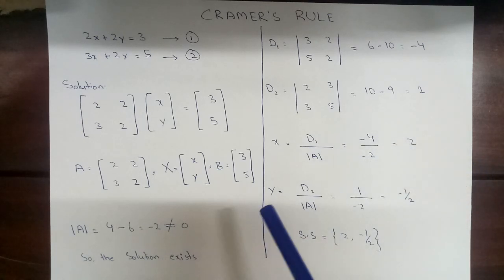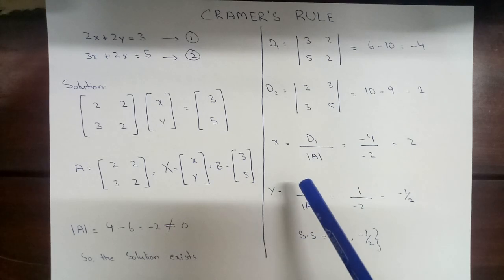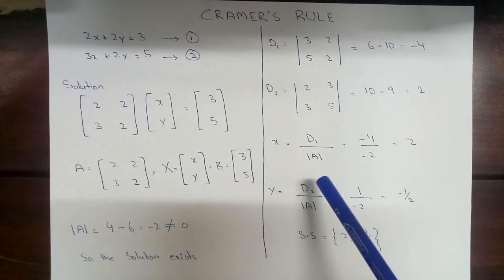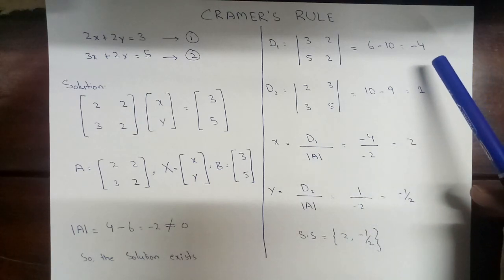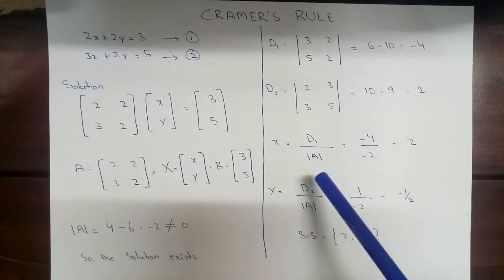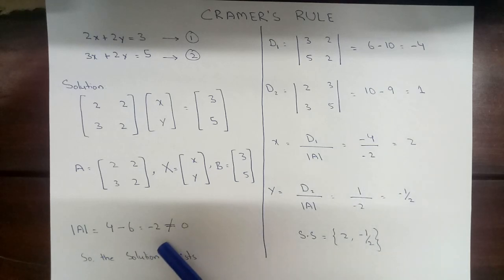Now we need to find out x and y. x is equal to D1 divided by determinant of A. What was D1? That was minus 4, and determinant of A was minus 2. Minus 4 divided by minus 2 will be 2.